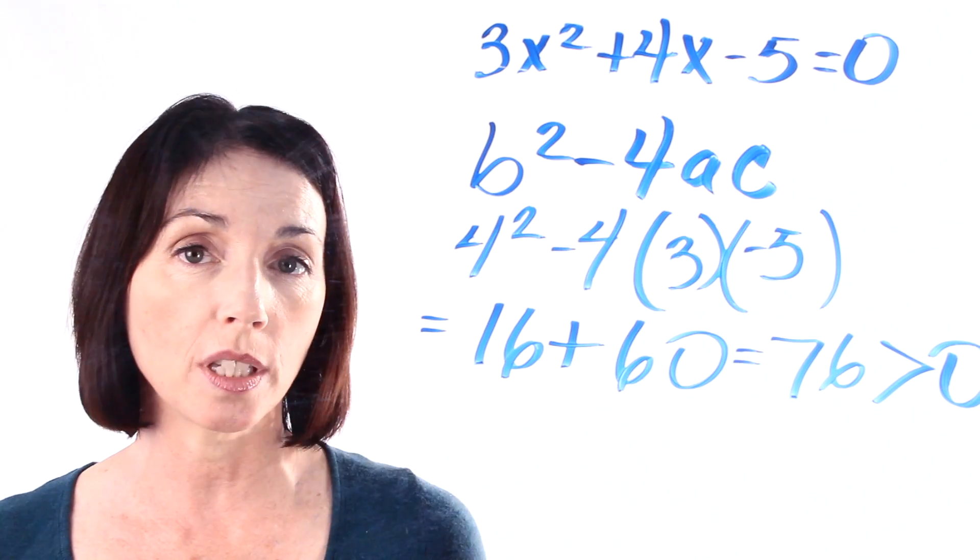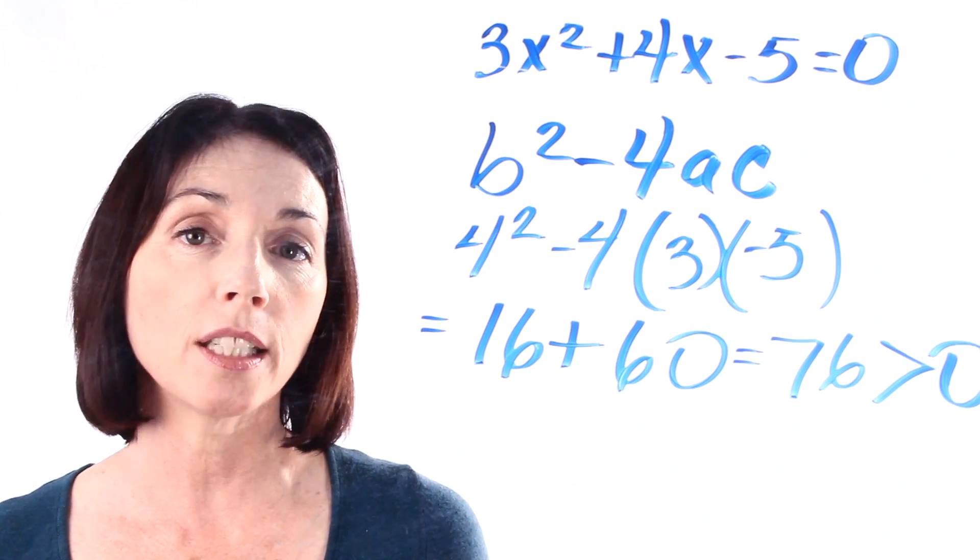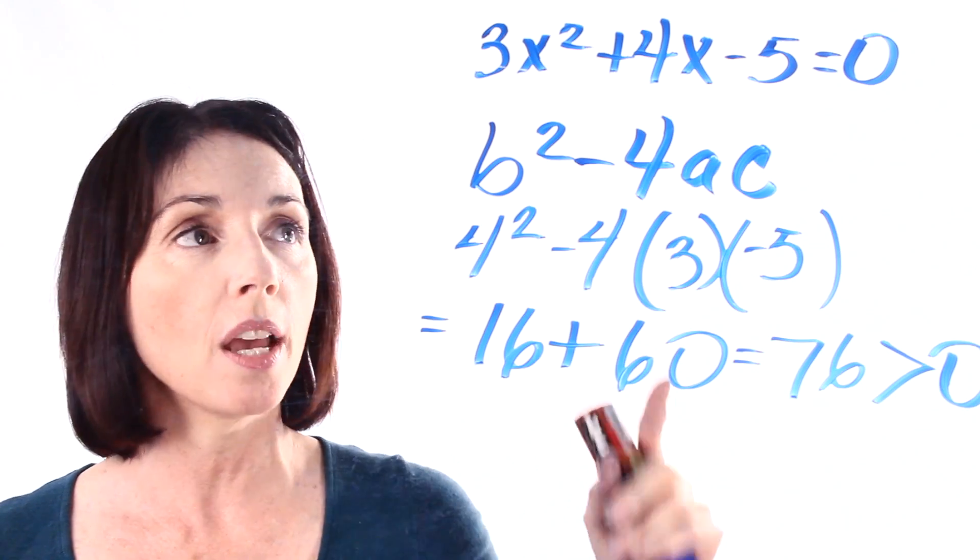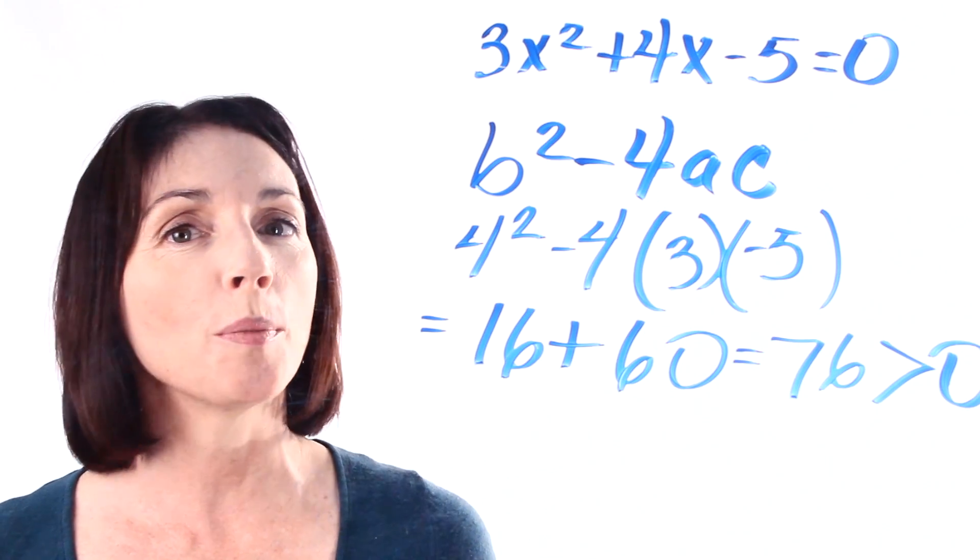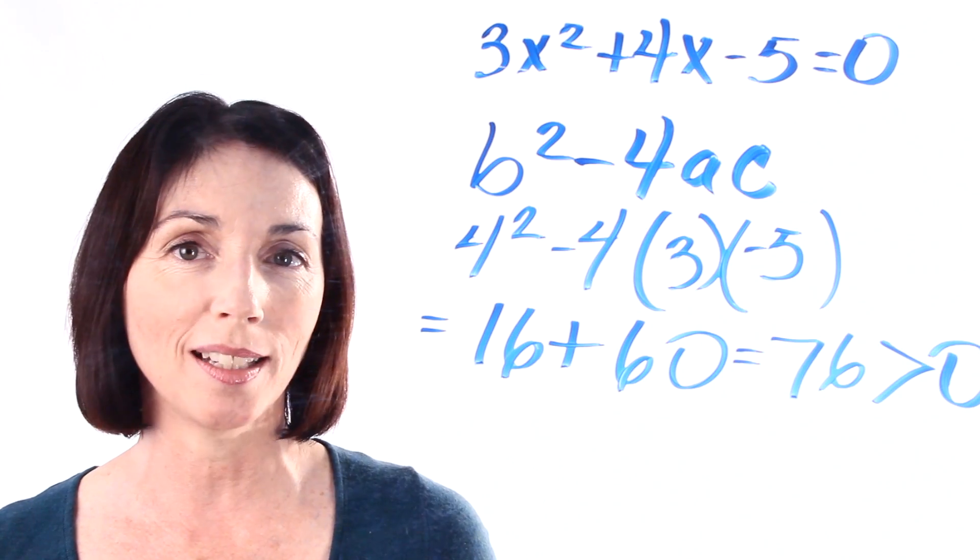So when you plug these values into the quadratic formula, you'll end up with two different real numbers that will solve the equation. That's how you use the discriminant to determine what kind of roots you have for a quadratic equation.